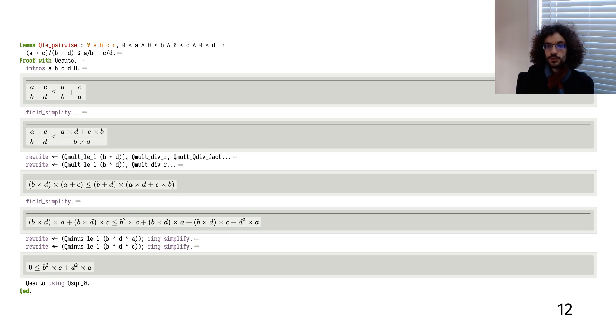First, we sum the two fractions on the right, then we expand the numerator, then we multiply both sides to get rid of the denominators, then we simplify and cancel both sides, and lastly, we use the fact that a square is always positive. That's really what it is.